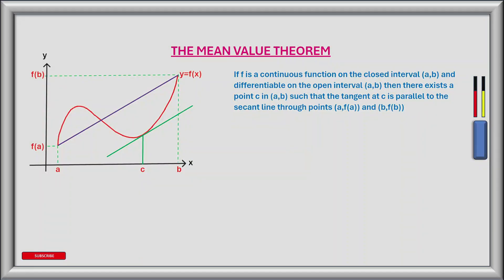The mean value theorem states that if f is a continuous function on the closed interval a comma b and differentiable on the open interval a comma b, then there exists a point c in a comma b such that the tangent at c is parallel to the secant line through points a comma f of a and b comma f of b.